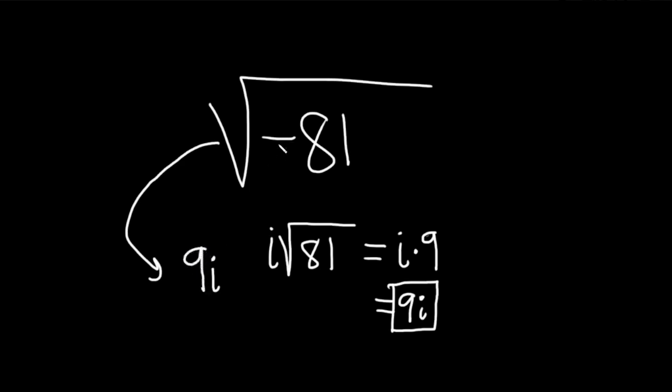So again, you see the negative in the root, you know it's going to be an i. And then the square root of 81 is 9. So it's just going to be 9i.